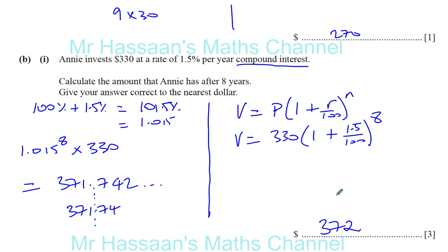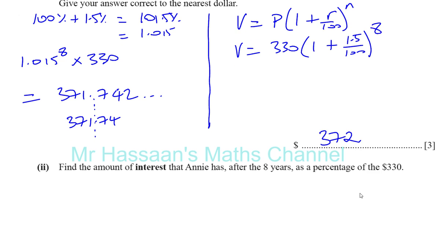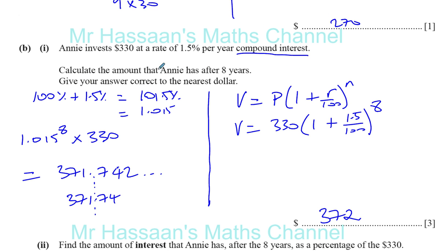The compound interest formula gives you the whole new value — the increased amount. The simple interest formula I = PRT/100 tells you just the interest, where P is the original amount, R is the rate, T is the number of years, and I is the extra interest. Here, that 330 has become 372, so the interest is $42 — the difference between the original amount and what it has become.